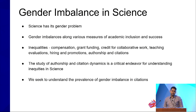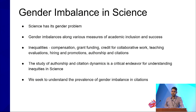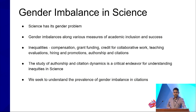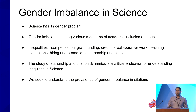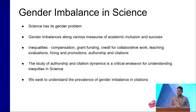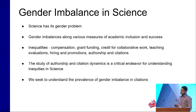Science has its gender problem, and prior research has found gender imbalances along various measures of academic inclusion and success. Such inequalities have been found in compensation, grant funding, credit for collaborative work, teaching evaluations, hiring and promotions, authorship and citations. Due to the potential downstream effects of such inequitable engagement, the study of authorship and citation dynamics is critical for understanding inequities in science. Here we seek to understand the prevalence of gender imbalances in citations.